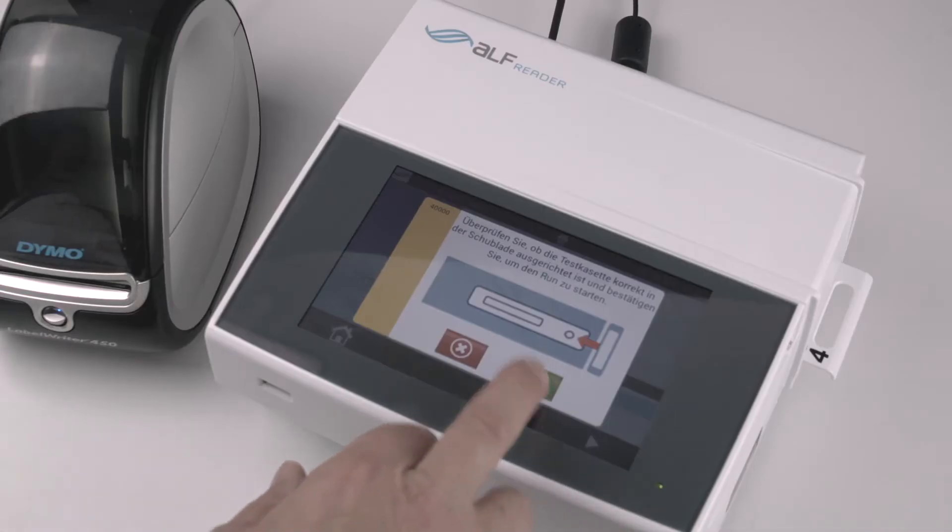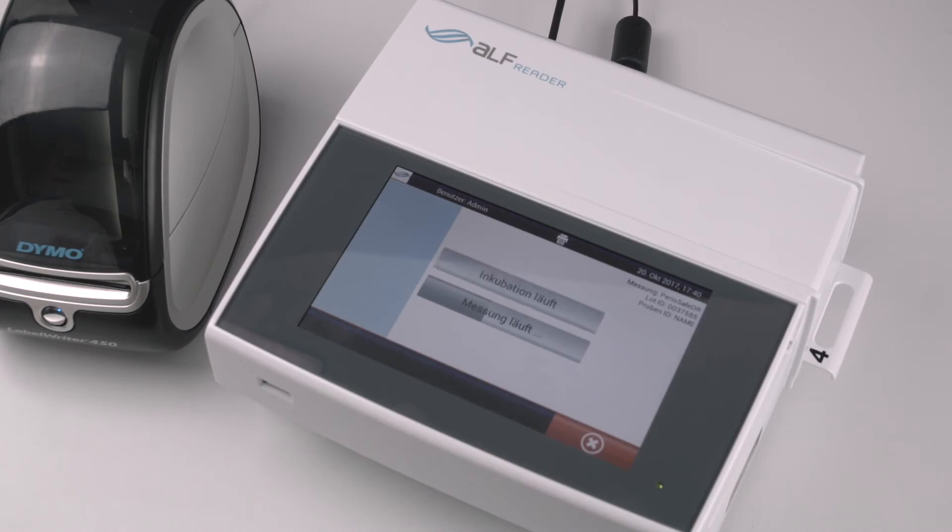Then push the cartridge all the way into the Auralizer and immediately start the analysis by pushing the green button on the screen. After 300 seconds, the Auralizer will automatically display the result on the screen.